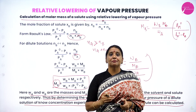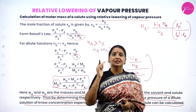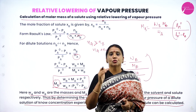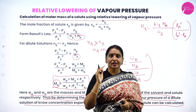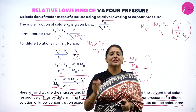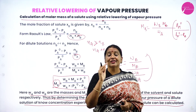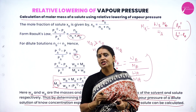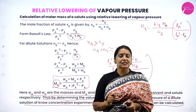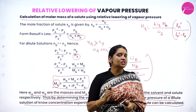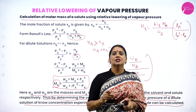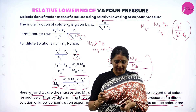To summarize, Raoult's Law of relative lowering of vapor pressure states that for a dilute solution, the relative lowering of vapor pressure is equal to the mole fraction of the solute. Therefore, the relative lowering of vapor pressure depends upon the number of solute particles, not on the nature of the solute particle.